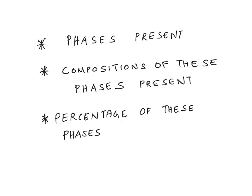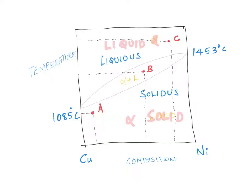First of all, I need to make a correction - apologies for the error in the previous video. Alpha was written in the wrong place; alpha should refer to the solid solution. The substitutional solid solution phase of copper and nickel is referred to as alpha, so the other region is simply liquid. Please take care of that correction from the previous video.